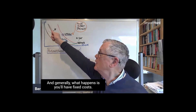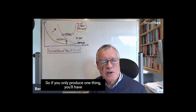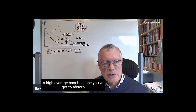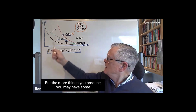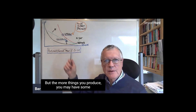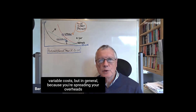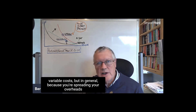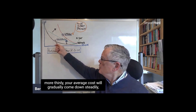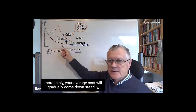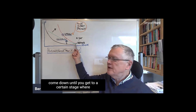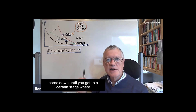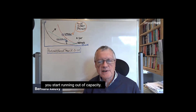Generally what happens is you'll have fixed costs, so if you only produce one thing you'll have a high average cost because you've got to absorb your fixed costs into that one unit. But the more things you produce, you may have some variable costs, but because you're spreading your overheads more thinly your average cost will gradually come down.